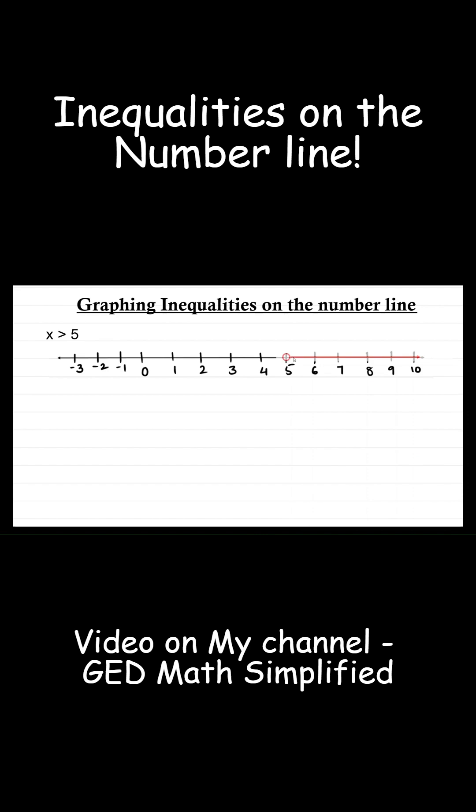It's more than 5. So all these values which are more than 5 are the solutions of this inequality and this arrow shows that of course it goes on and on.